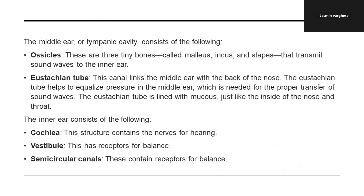The Eustachian tube links the middle ear back to the nose and helps equalize the pressure inside the middle ear, which is needed for proper transfer of sound waves. It is lined with mucus, just like the inside of the nose and throat. The inner ear has three parts: the cochlea, which contains the nerve for hearing; the vestibule, which has receptors for balance; and the semicircular canals, which also contain receptors for balance.